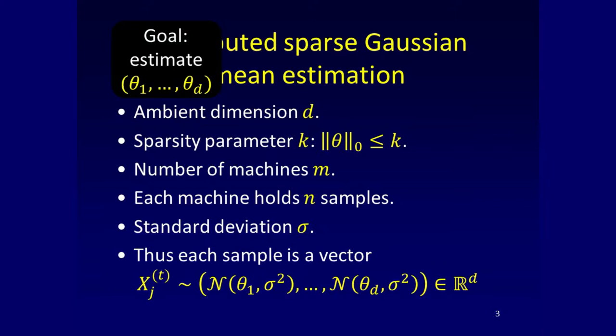There are M machines and each machine gets N samples. This is essentially the same as having the samples randomly partitioned, because it doesn't matter whether you first produce the samples and then distribute them or produce them independently. There is a standard deviation sigma. The goal is to estimate the mean.